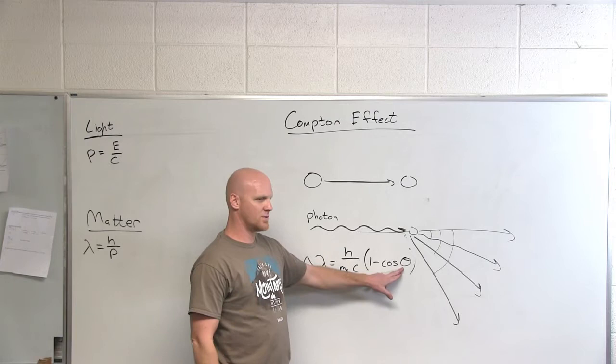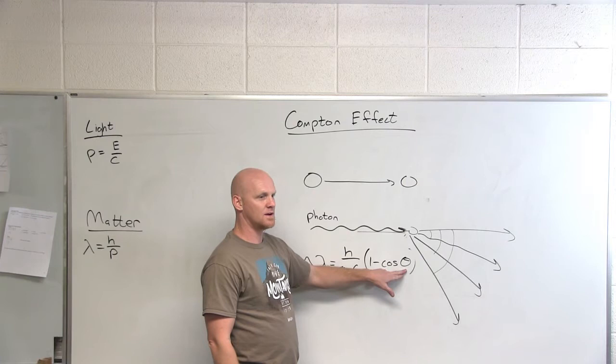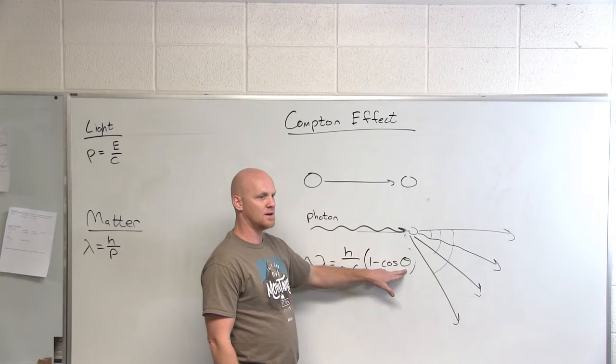What would you say theta was in that case? About straight back, perfect reflection, 180. What's the cosine of 180? Negative one. What's one minus negative one? Two. And that's the biggest this could be is when what's in parentheses there is one minus negative two.